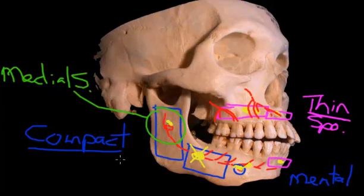So this is why the difference between the two types of bone is so important in the decision-making about giving local anaesthetic. Thank you.